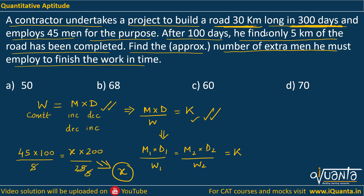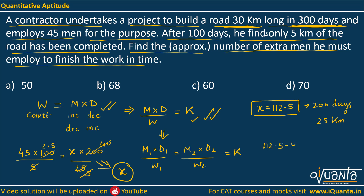If you calculate the value of x from this relation: x = 45 × 2.5 = 112.5. So 112.5 is the total number of men who will work for 200 days to build the 25 kilometers of road remaining. How many extra men were employed? 45 were already there, so extra men = 112.5 − 45 = 67.5.